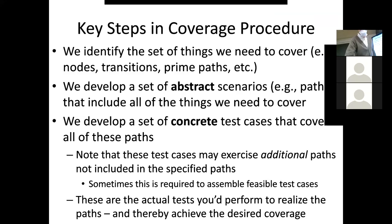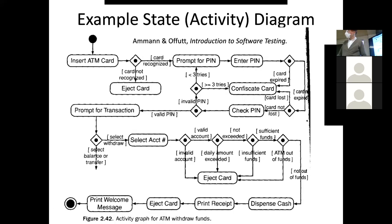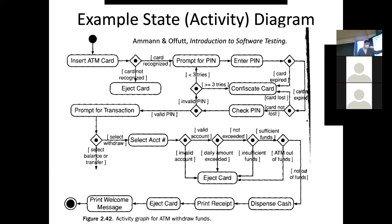Those are abstract paths — that's the second step. The third step is we need concrete test cases, because what I've just been describing is abstract paths. Now for the final step we need specifics — like particular things that are going to exercise each of those abstract paths. What's our PIN? What are the specifics of the account, by how much has it been exceeded? We need specific inputs and outputs. That would be a test case — a fully specified test case.